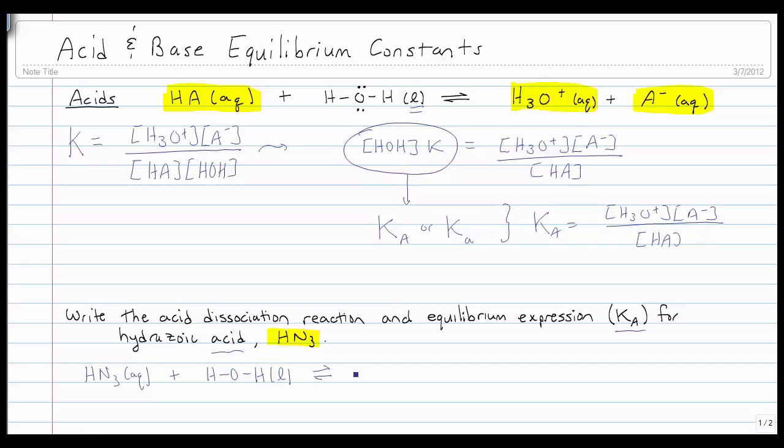It's an acid so it's going to donate that proton and form H3O+. And then N3- will be remaining. That'll be our anion. And KA for this is very simple. It's equal to products over reactants, ignoring the liquid. There you go.